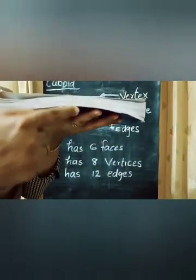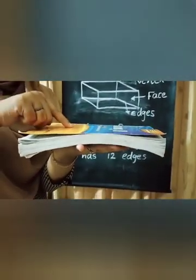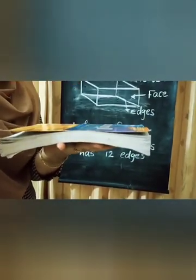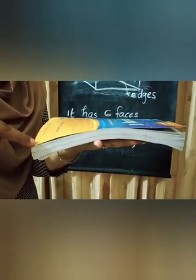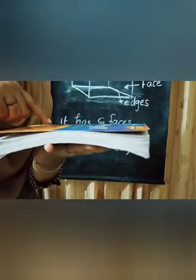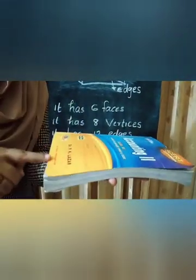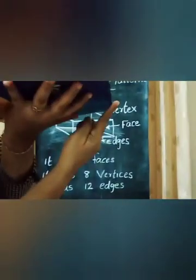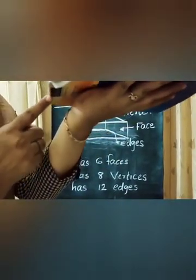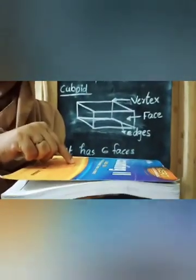A Cuboid has 6 Faces — counting: 1, 2, 3, 4, 5, 6. Then it has 8 Vertices — counting: 1, 2, 3, 4, 5, 6, 7, 8. A Cuboid has 8 Vertices. And it has 12 Edges — counting: 1, 2, 3, 4, 5, 6, 7, 8, 9, 10, 11, 12. A Cuboid has 12 edges.